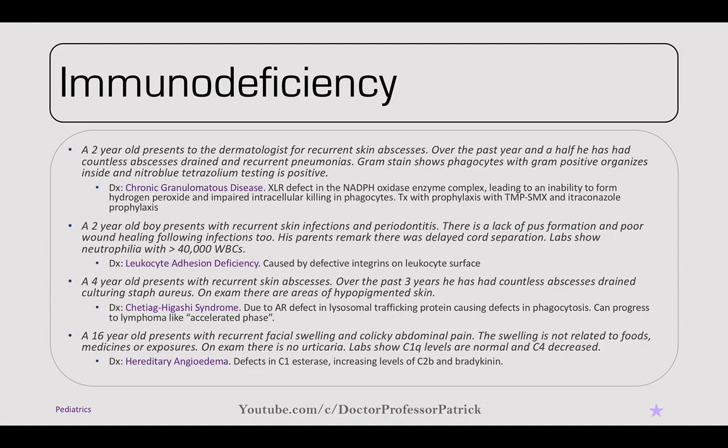A 16-year-old presents with recurrent facial swelling and colicky abdominal pain. The swelling is not related to foods, medicines, or exposures. On exam, there's no urticaria. Labs show normal C1Q levels and decreased C4. This is hereditary angioedema — caused by defects in C1 esterase inhibitor, leading to increasing levels of C2b and bradykinin, causing this almost allergic-like reaction.